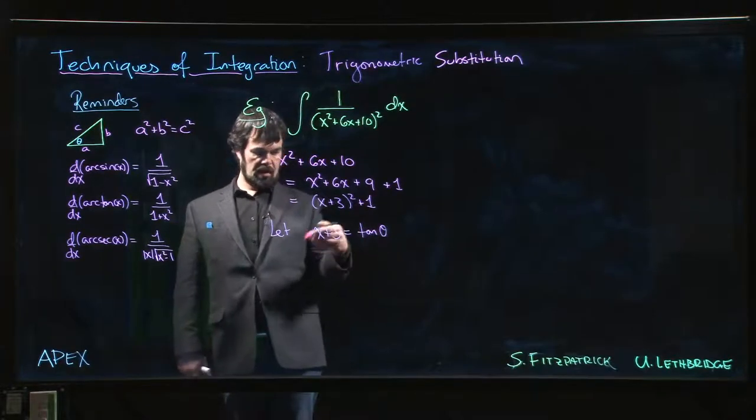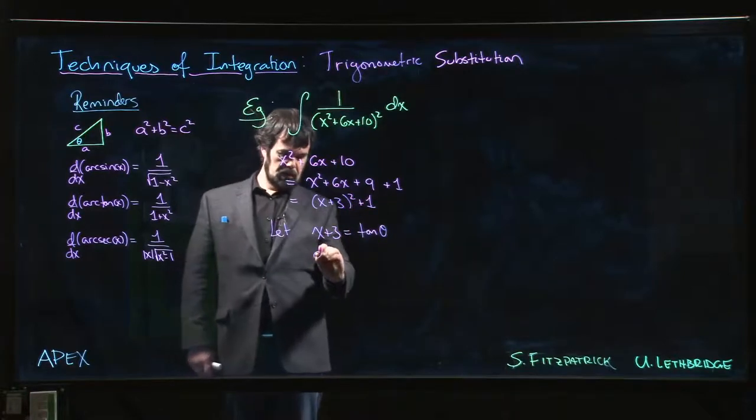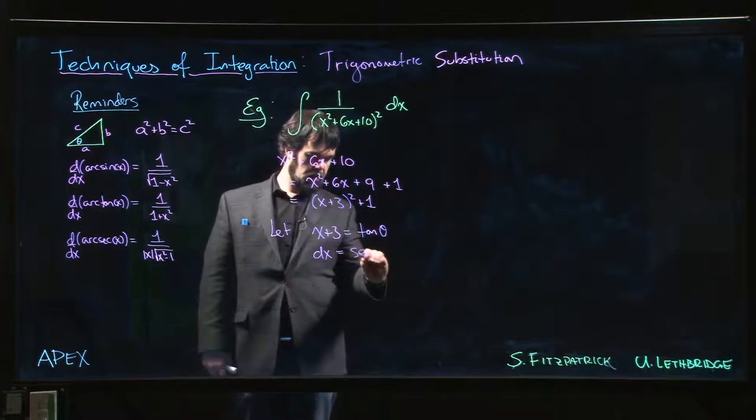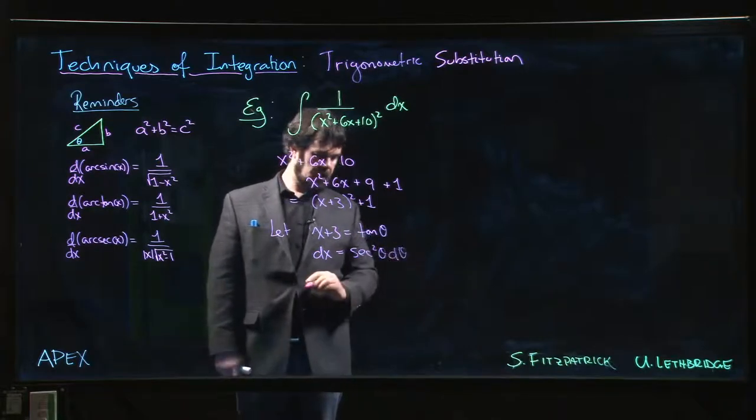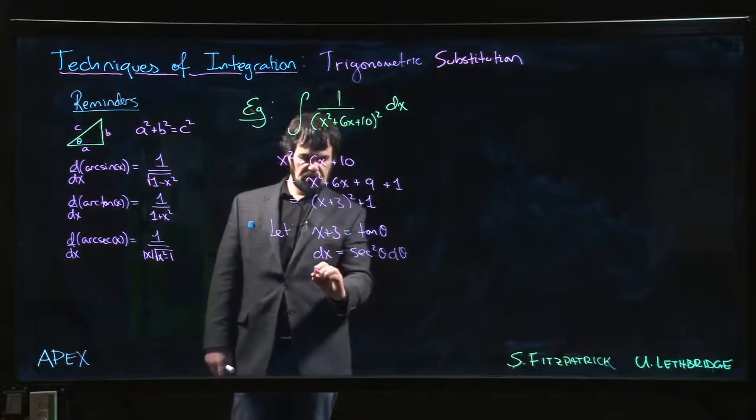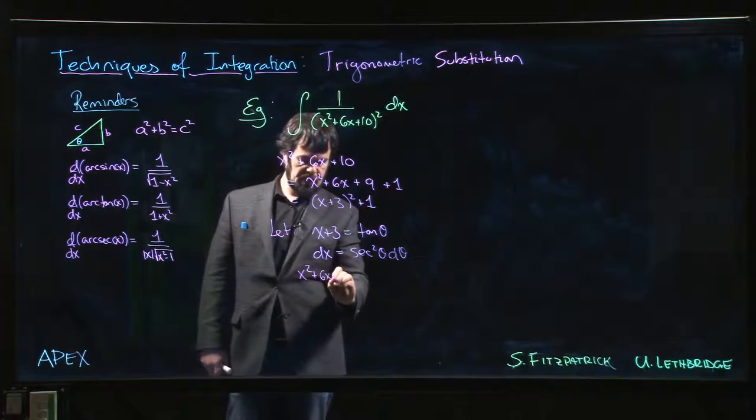So x is tan theta minus 3, or theta is arc tan of x plus 3. Taking d of both sides, dx is secant squared theta d theta.